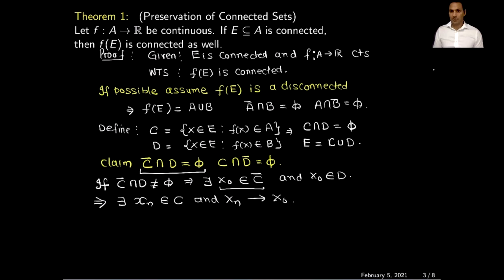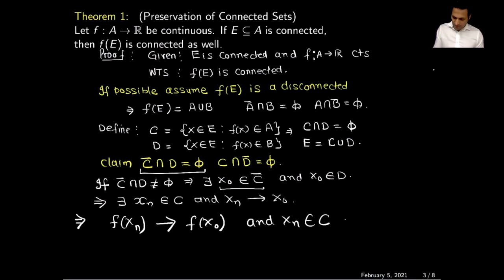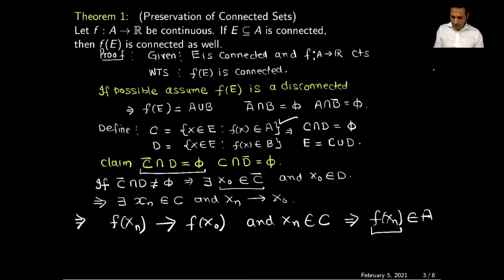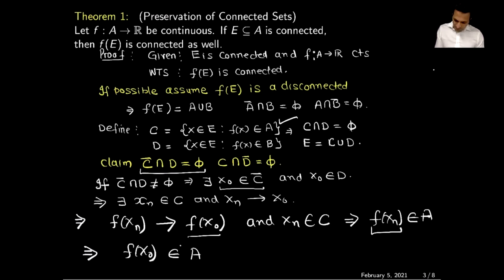Since xₙ converges to x₀ and f is continuous, by the sequential characterization of continuity, f(xₙ) converges to f(x₀). Also, since xₙ belongs to C, by the definition of C, f(xₙ) must belong to A. Since f(xₙ) belongs to A and converges to f(x₀), this implies f(x₀) is a limit point of A, so f(x₀) belongs to the closure of A.